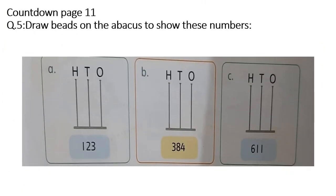Students, now please open your Countdown page 11. Question number 5: draw beads on the abacus to show these numbers. Part A: in hundreds, draw 1 bead. In tens, draw 2 beads. In ones, draw 3 beads. You can also color it. Part B is 384: draw 3 beads in hundreds, 8 beads in tens, 4 beads in ones. Part C: draw 6 beads in hundreds, 1 bead in tens, 1 bead in ones — that's 611.